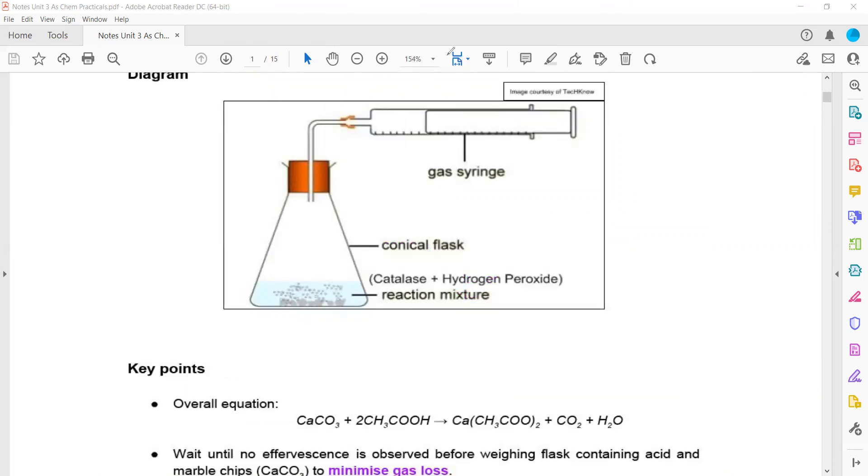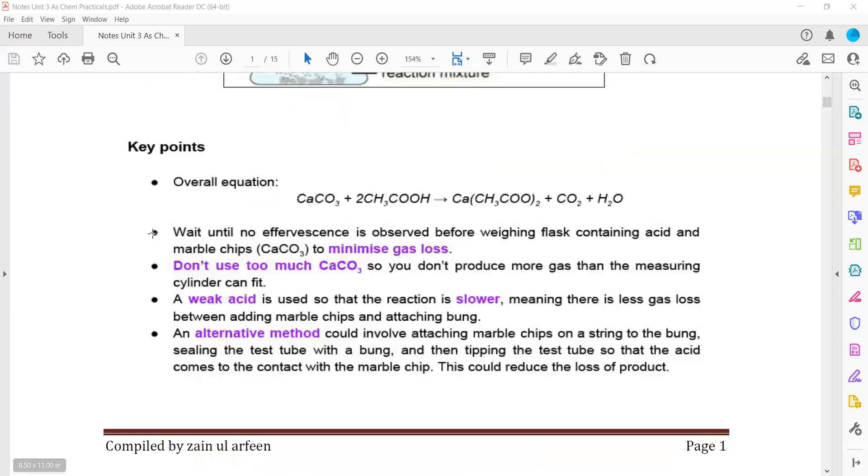Why not use sulfuric acid? Because initially the bung isn't placed—you add the solid or acid, then place the bung. During this time, some reaction occurs and gas might escape. If using a strong acid, the reaction would be instant and more gas would escape. Using a weak acid minimizes the amount of gas that escapes.